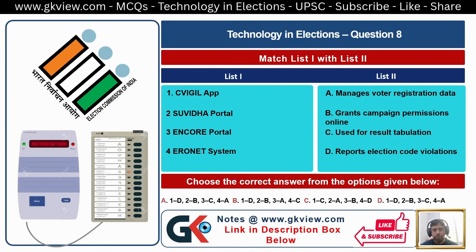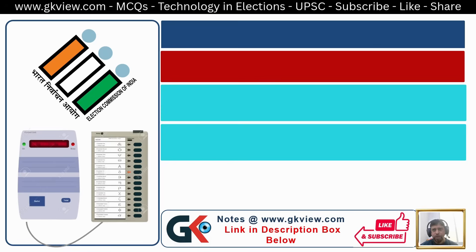Matching List 1 with List 2: C-Vigil App reports election code violations, so 1 matches with D. Suvidha Portal grants campaign permissions online, so 2 matches with B. Encore Portal is used for result tabulation, so 3 matches with C. Eronet System manages voter registration data, so 4 matches with A. The answer is 1-D, 2-B, 3-C, 4-A.